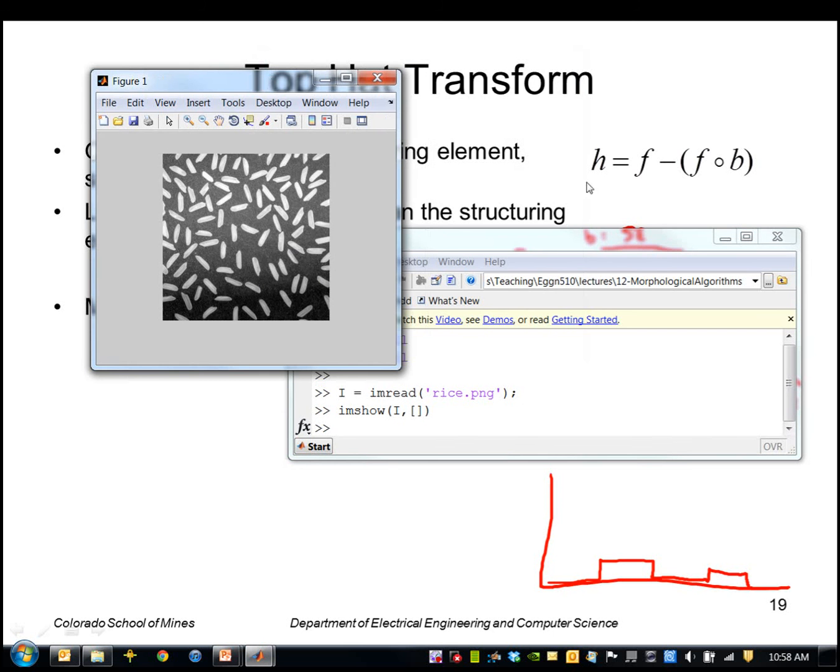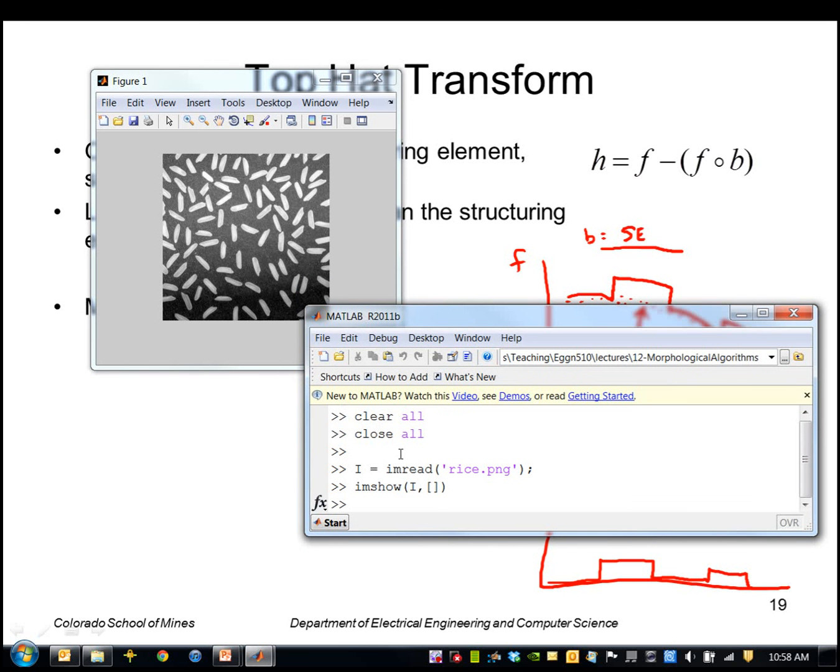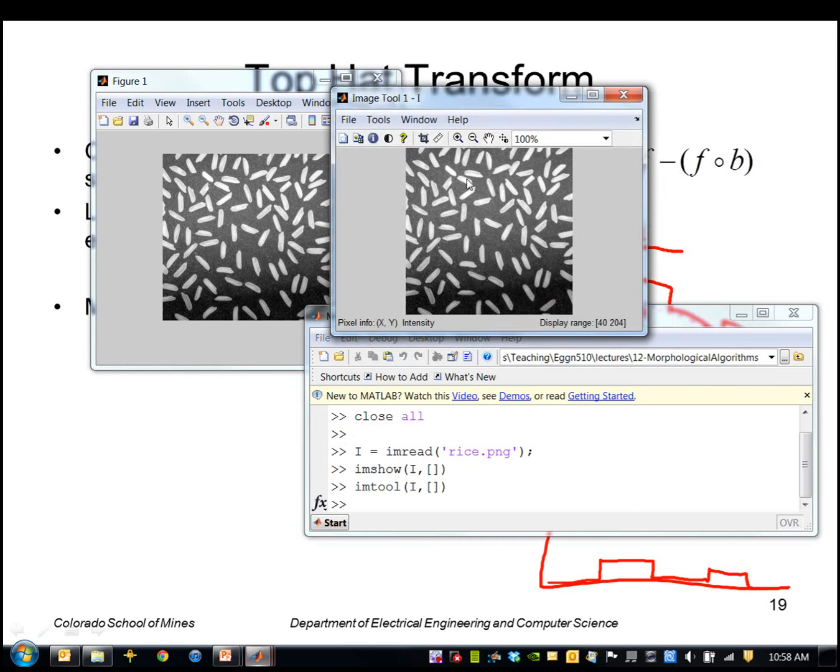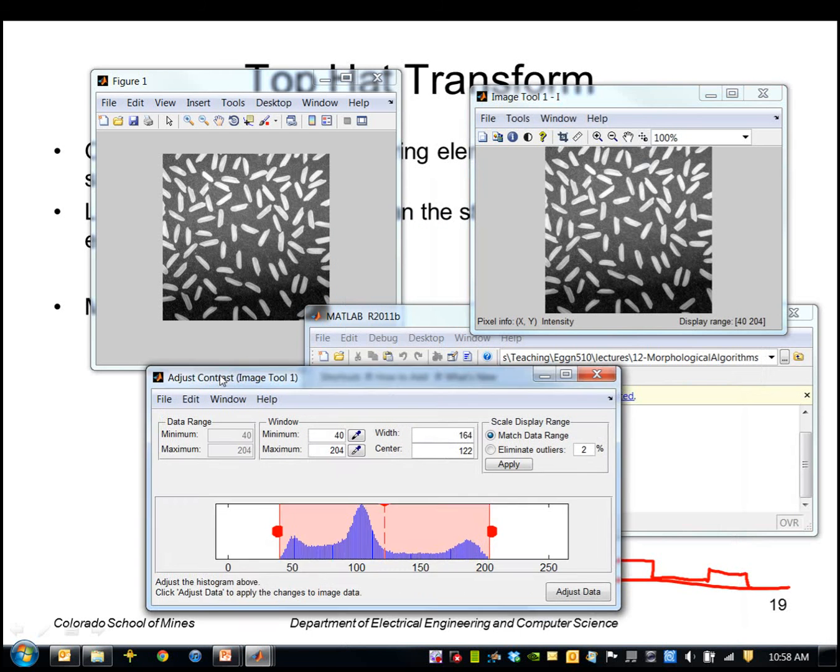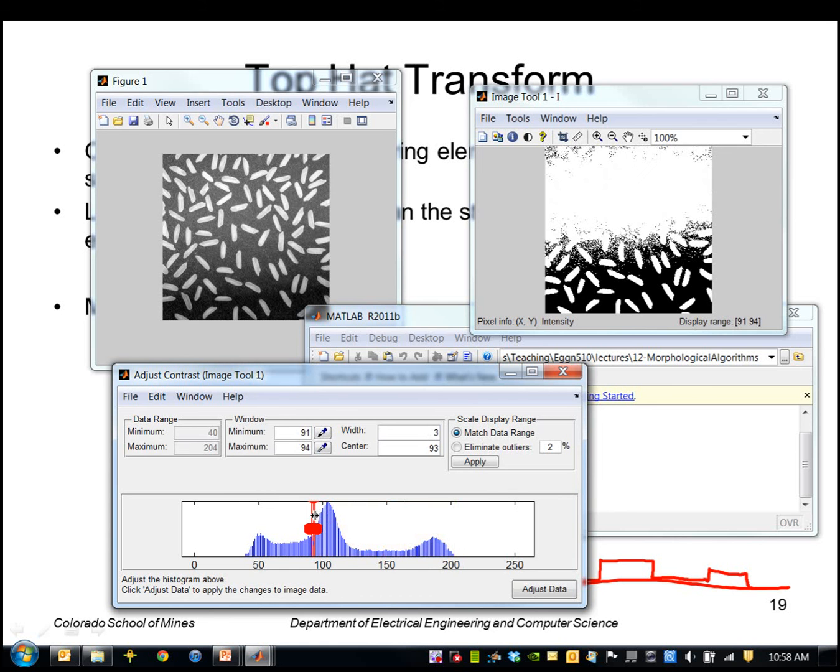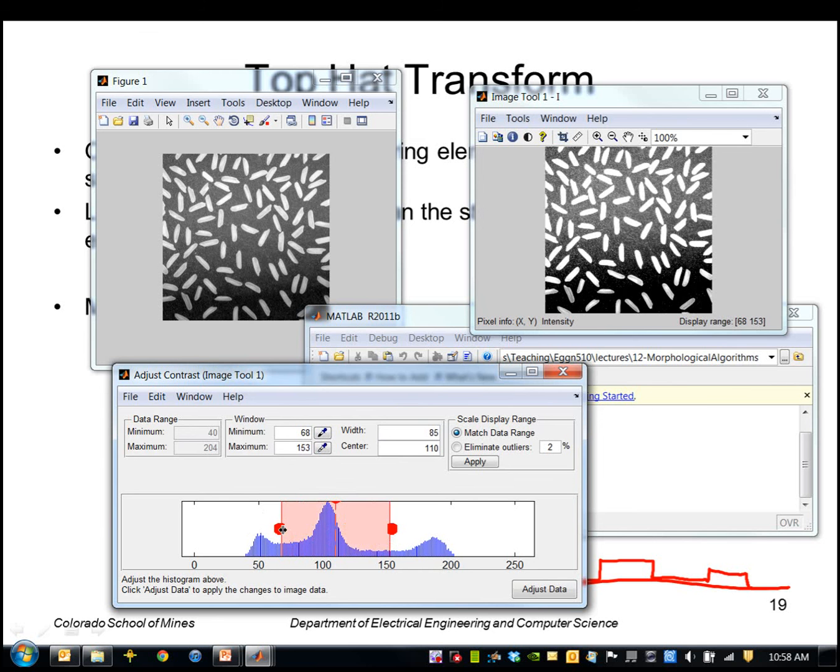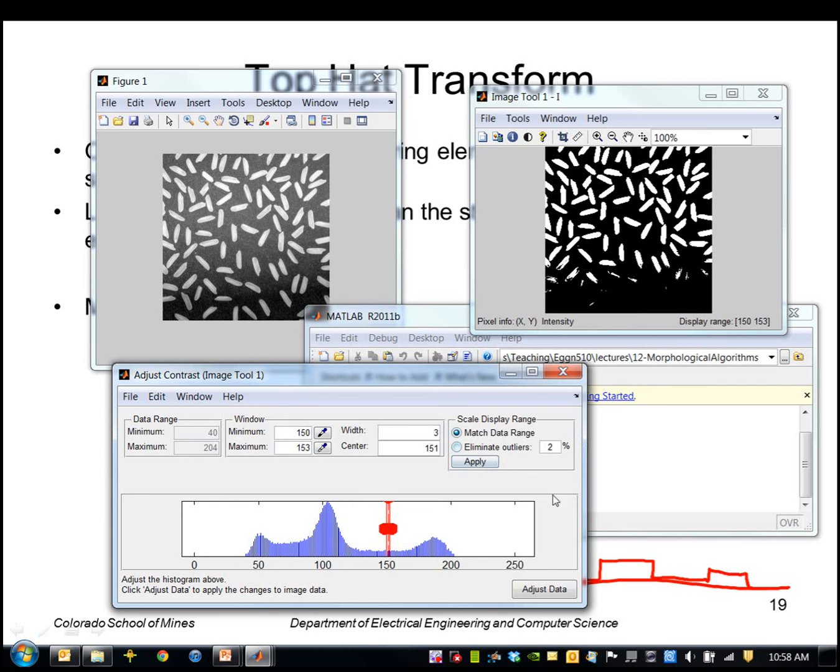So here's an example of grains of rice. The background is changing, though, so it is not constant. So it's difficult, for example, to segment those pieces. If I were to say, let me just do IM tool and then sort of interactively change the threshold with this tool. So it's difficult for me to find a value that segments all of the rice grains from the background, as you can see. So I would like to remove the background and just leave the rice grains.